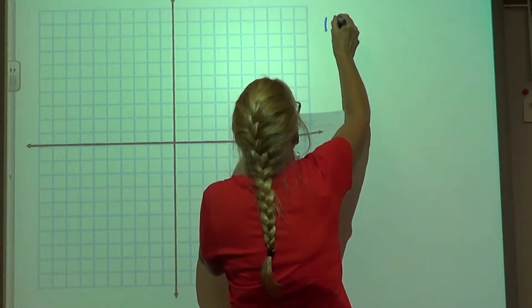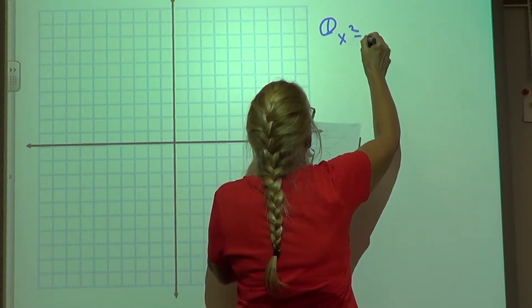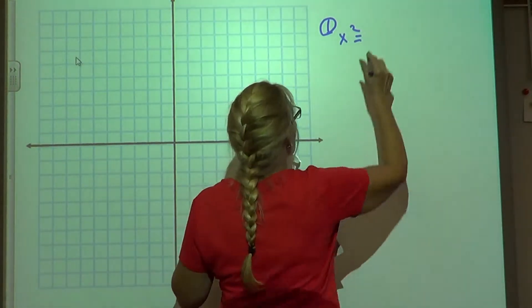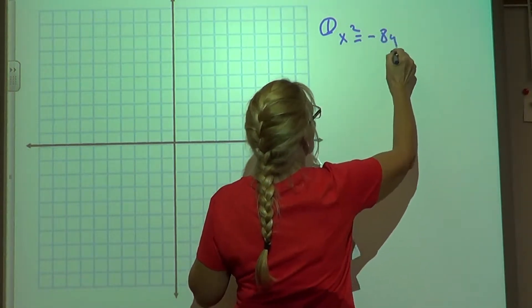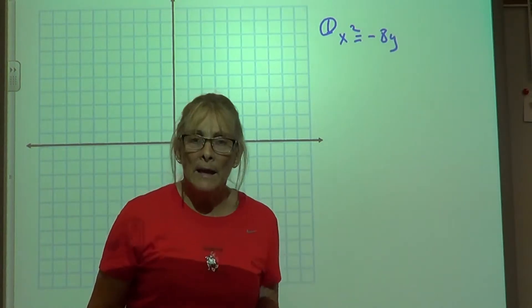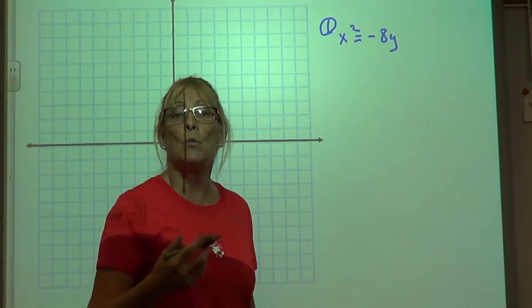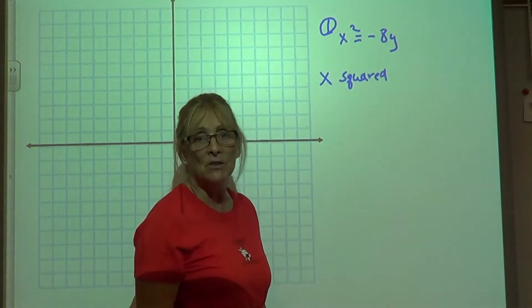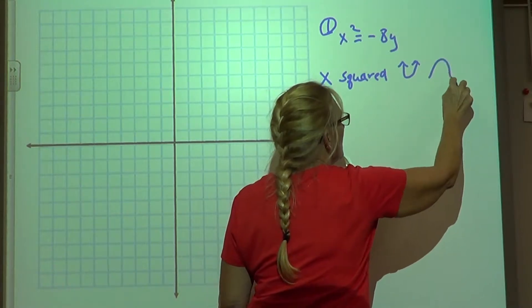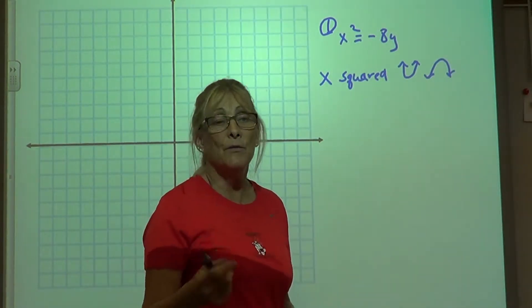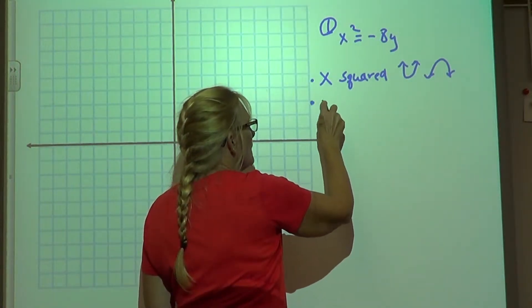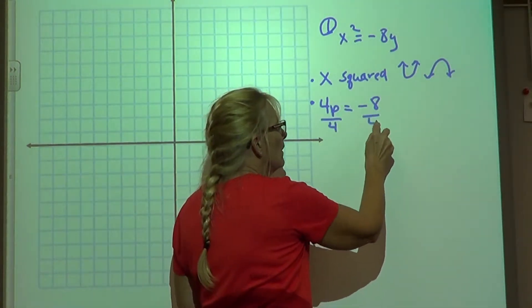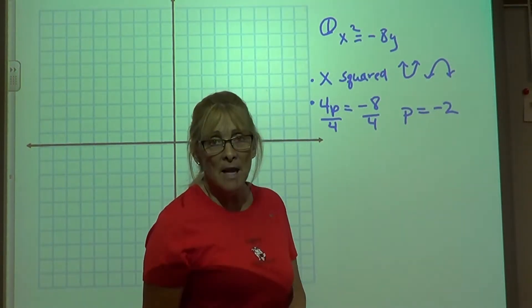Example number one. x squared equals negative 8y. We analyze it before we just start graphing. So our first thing is to look at which one is squared. Since x is squared, then it must open up or down. And the next thing I look at is 4p, which in this case is equal to negative 8. When we divide by 4, p is equal to negative 2. Since p is negative, it opens down.